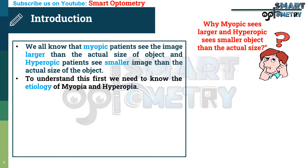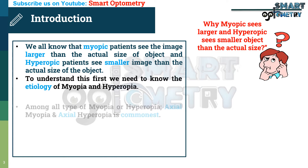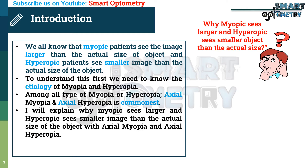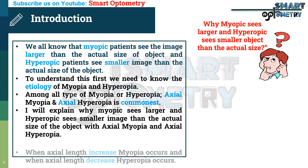To understand this, first we need to know the etiology of myopia and hyperopia. Among all types of myopia and hyperopia, axial myopia and axial hyperopia are the most common. I will explain why myopic sees larger and hyperopic sees smaller image than the actual size of the object using axial myopia and axial hyperopia.